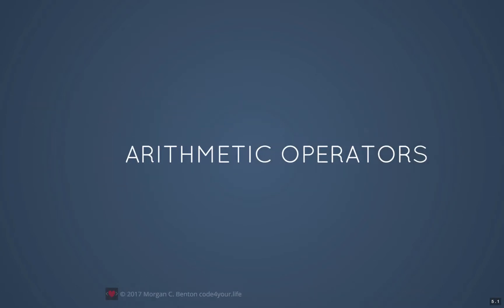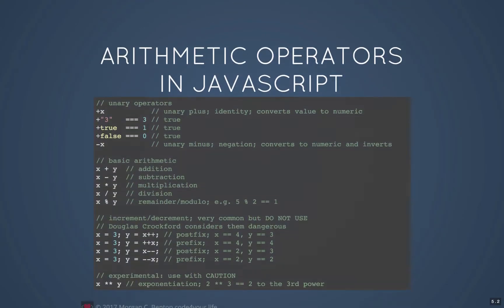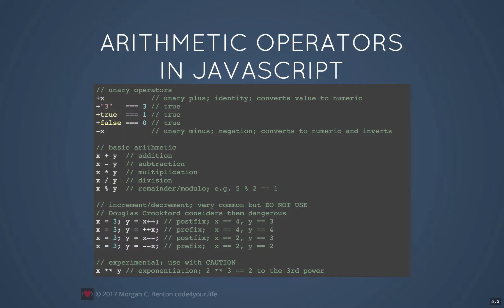Now let's look at some code examples of the various different types of operators, starting with arithmetic operators. In JavaScript, you have a unary operator — the plus sign or the minus sign. The plus sign, which you don't see all too often, has the job of converting a value into its numeric equivalent. So for example, plus the string '3' will give you the integer value 3. Plus true and plus false will give you integer 1 and 0. And the negative sign inverts this, so it would be minus 3 or minus 1.